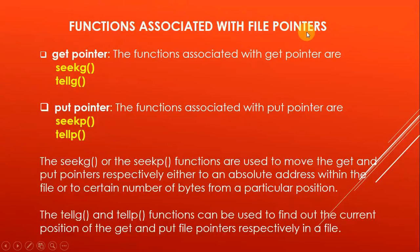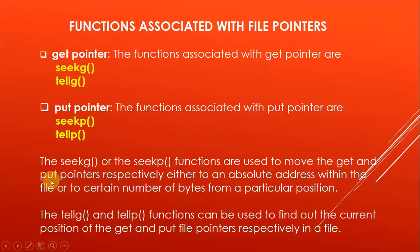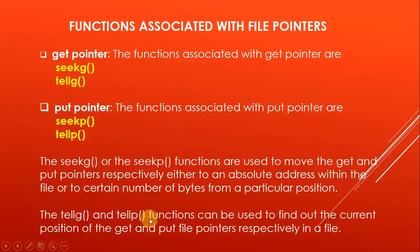Now let us learn the functions associated with file pointers. The functions associated with the get pointer are seekg() and tellg(). The functions associated with the put pointer are seekp() and tellp(). seekg() and seekp() are used to move the get and put pointers to a specified location. tellg() and tellp() are used to find out the current position of the get and put file pointers respectively in a file.